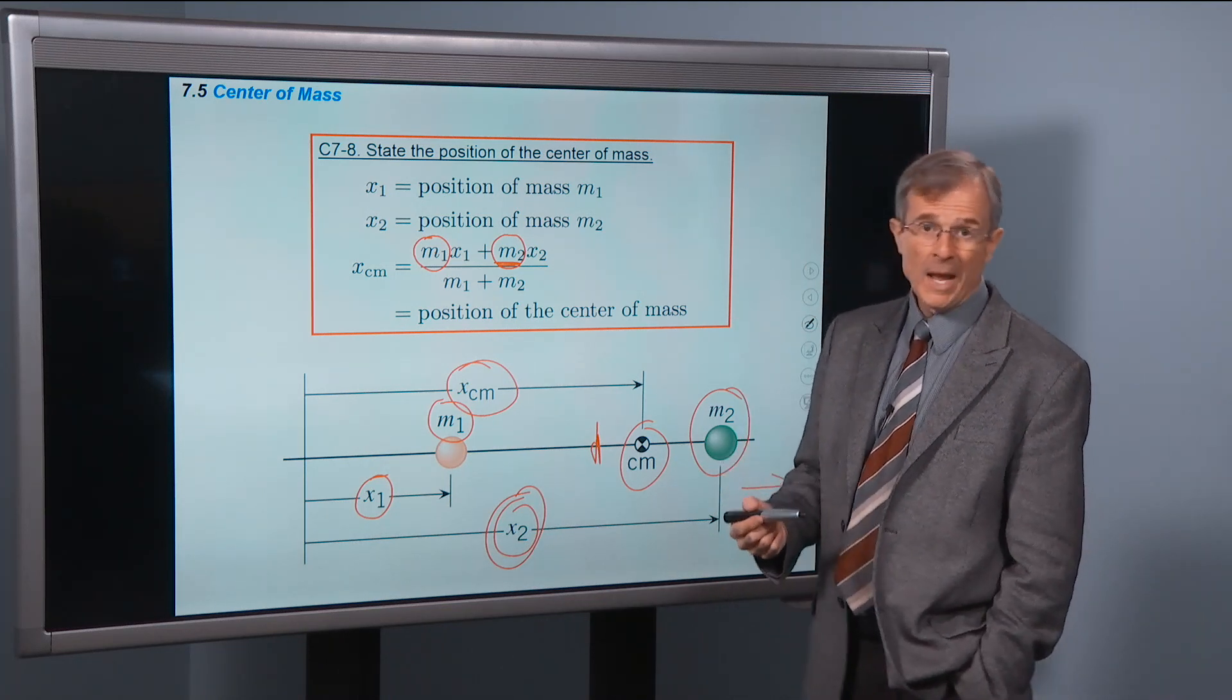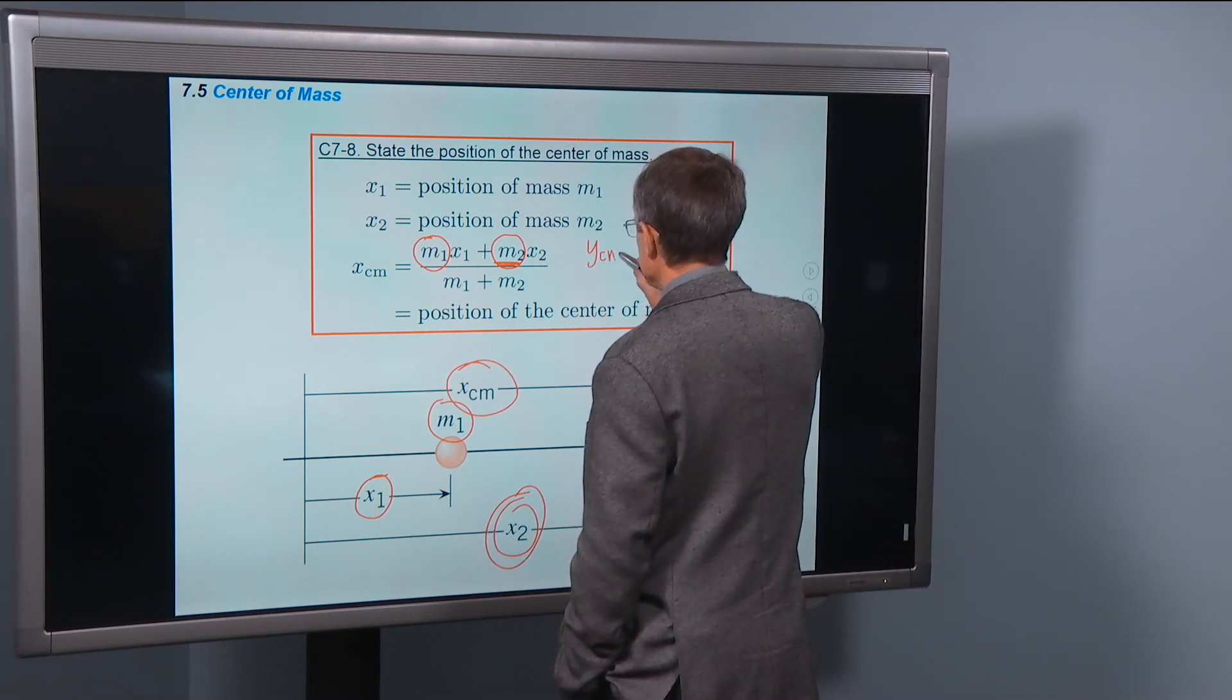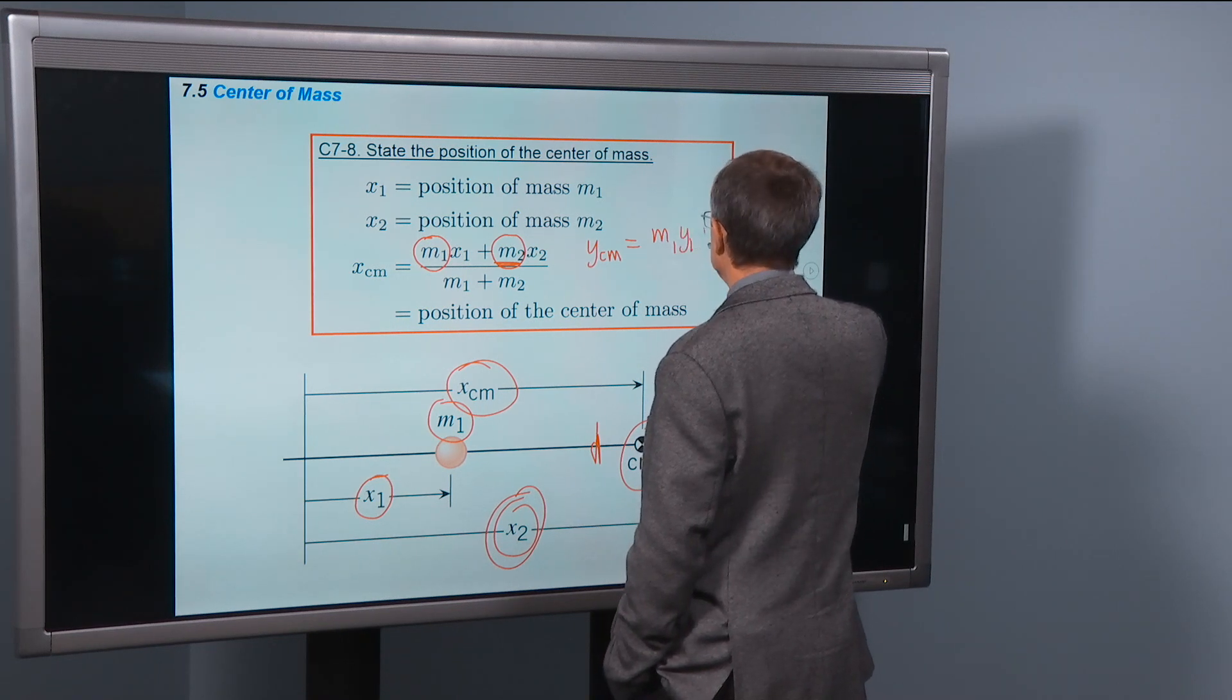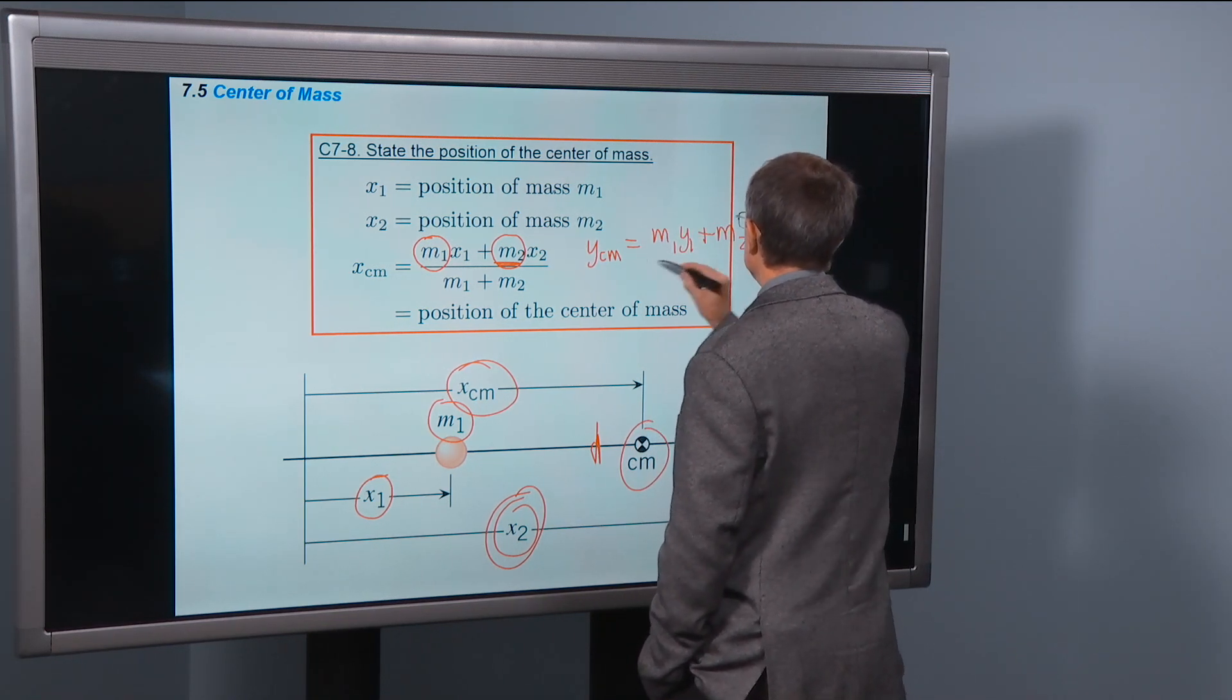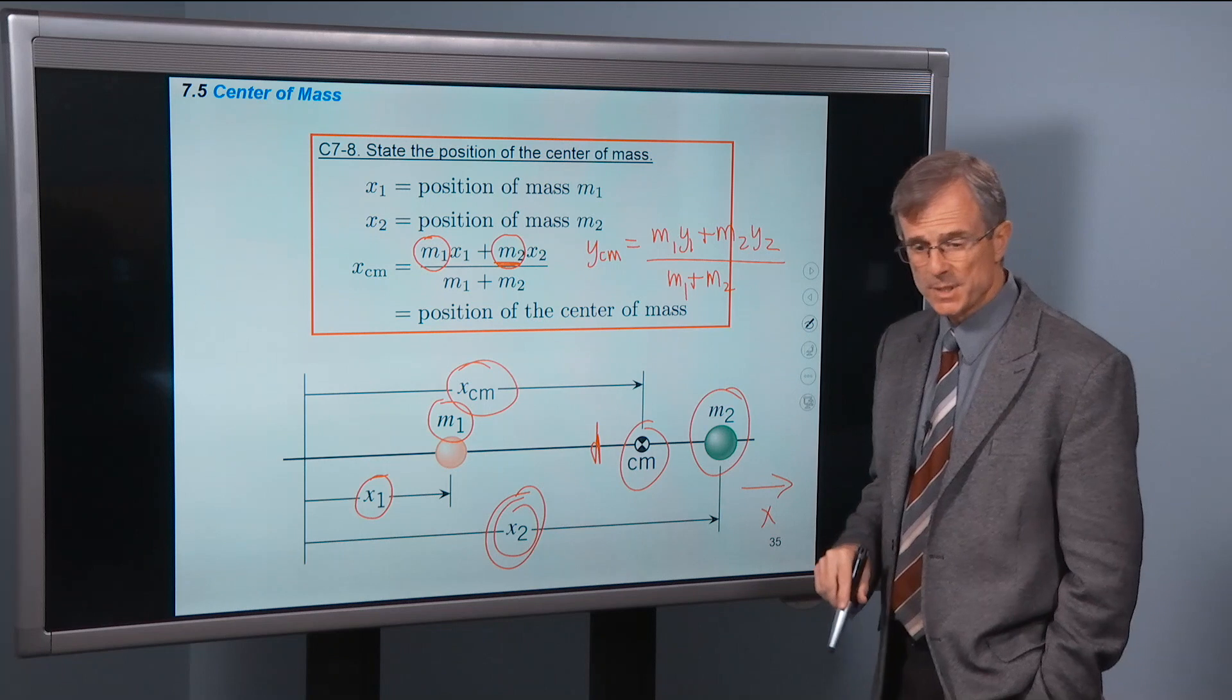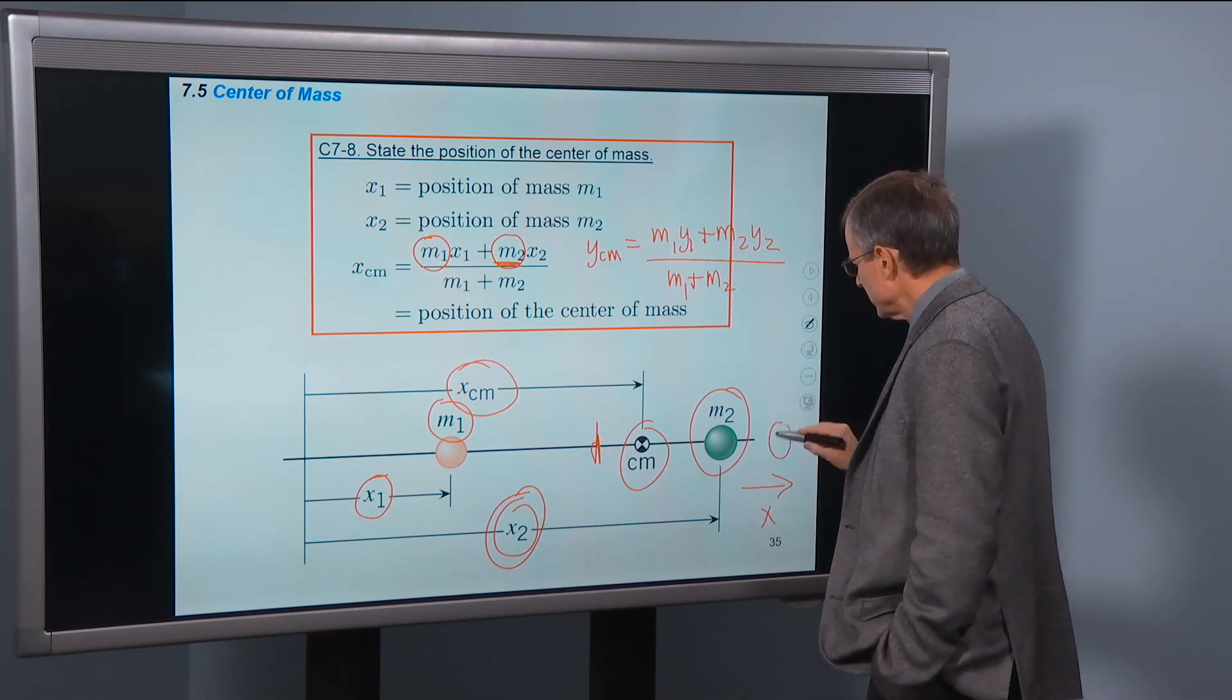So that's how you calculate it. How do I find the y center of mass? How about this? Just like that. Follow the same procedure. What if I have a third mass, m-three? How would I add that in there?